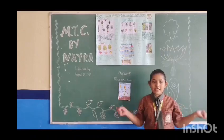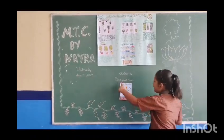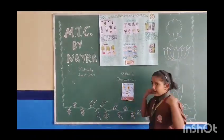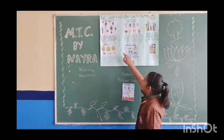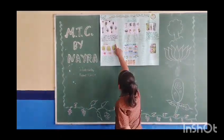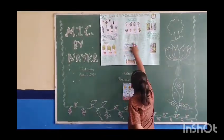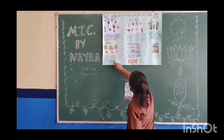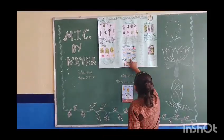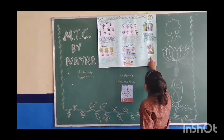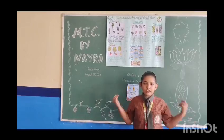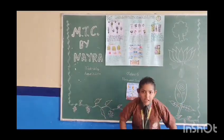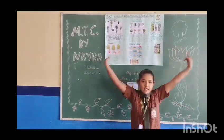So students, today we have discussed what are plants and trees. There are six types of plants: first herbs, second shrubs, third climbers, fourth trees, fifth aquatic water plants, sixth creepers. So we should plant more and more trees. Thank you. Have a nice day.